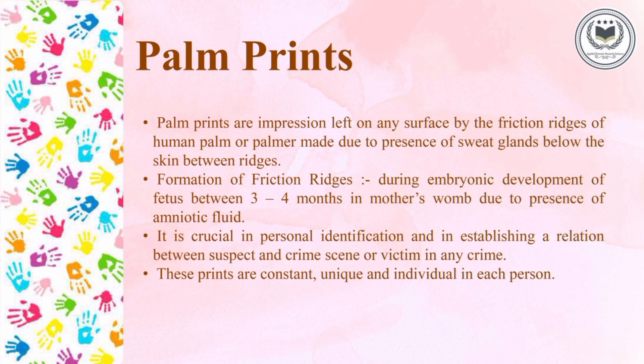Palm prints are any impressions left on any surface due to sweat glands present between the friction ridges under the skin of the human hand. These friction ridges are formed between the third to fourth month of embryonic or fetal development, which helps us to hold or grip any surface. These palm prints help in personal identification and establishing the relation between suspect, crime scene, and the victim. These prints are constant, unique, and individual to each person in the world.